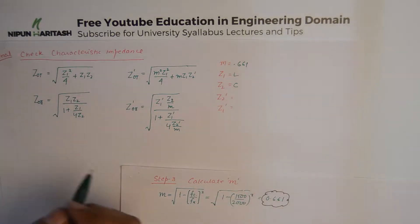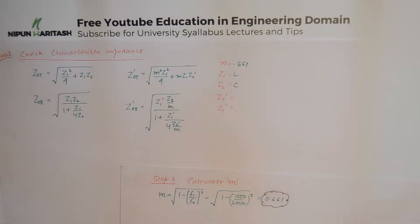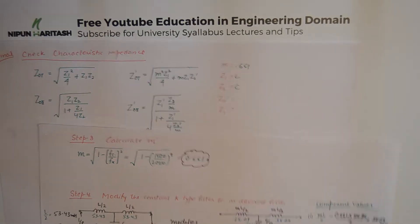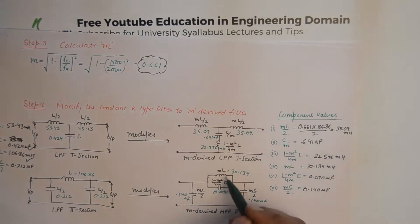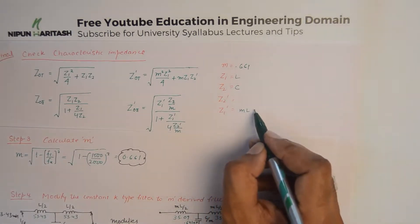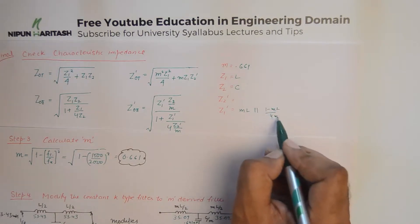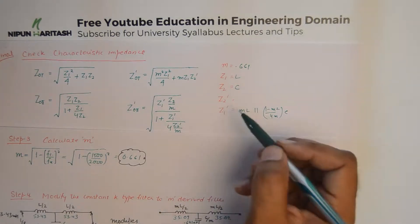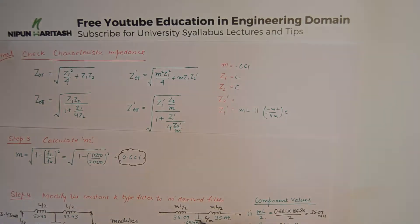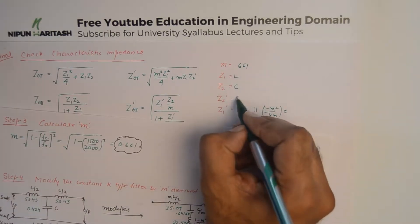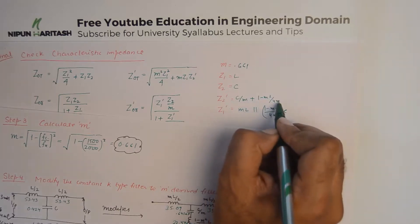The new Z1-dash for Z0-pi can be found as the combination of two parallel branches: Z1-dash = mL parallel with (1 − m²)/(4m) × C. The new Z2-dash for the T section is found by adding: Z2-dash = C/m + (1 − m²)/(4m) × L.